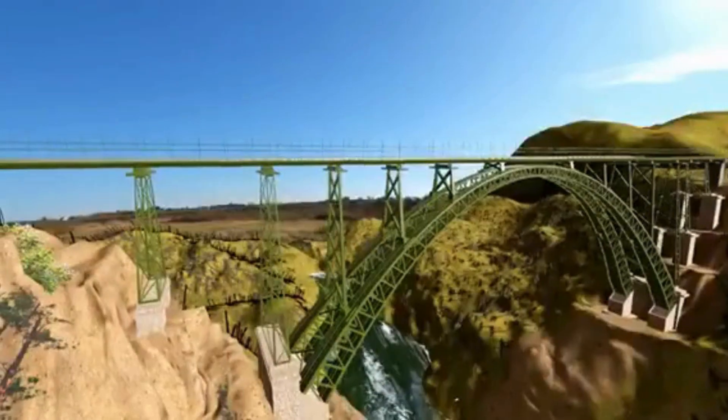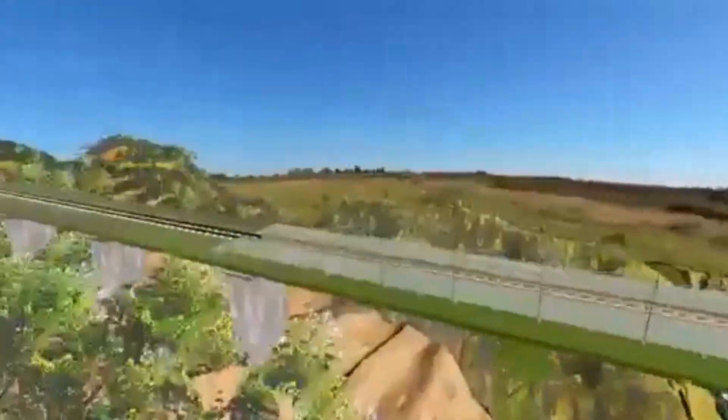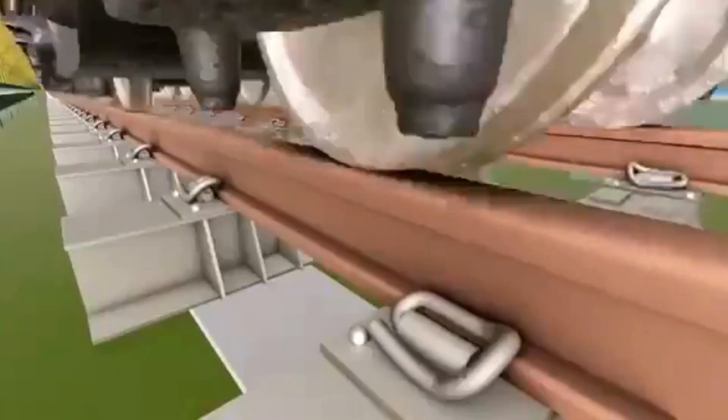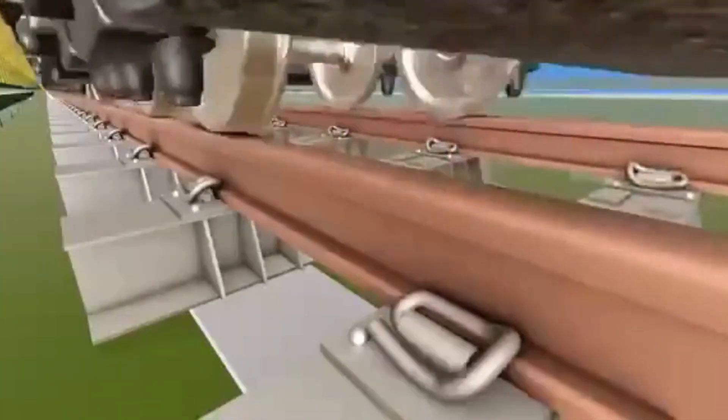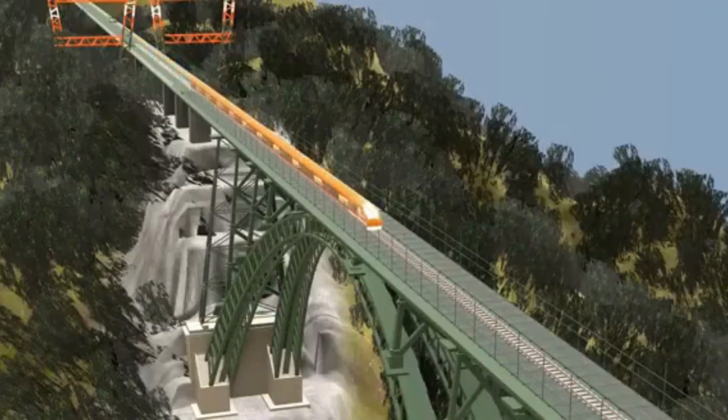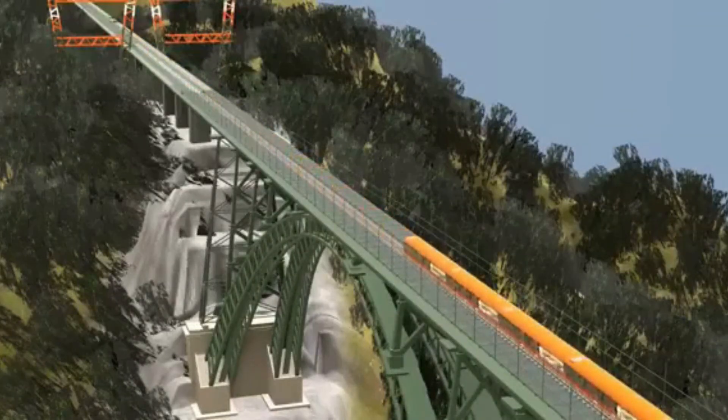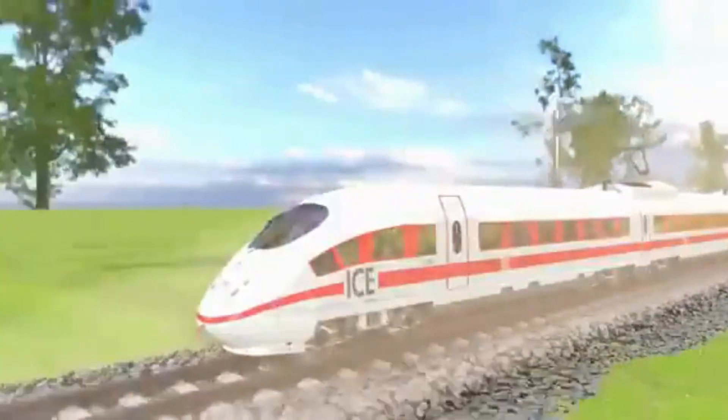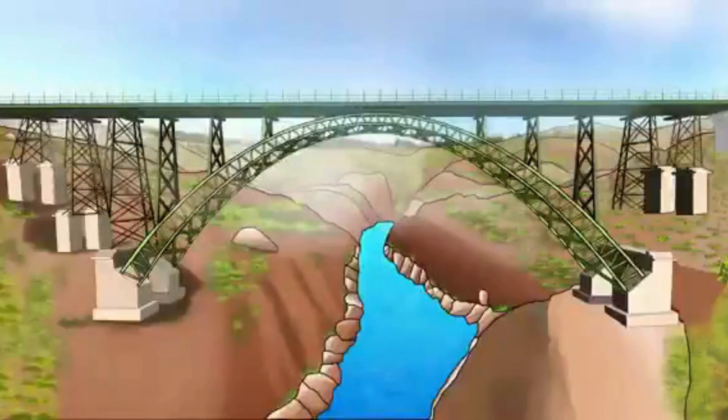The Chenab bridge uses a ballastless track. Almost all high-speed railway projects use this technology. These animations illustrate how the different components in the ballastless track absorb vibrations. This bridge is designed to support a train with a maximum speed of up to 100 km per hour. Ballast tracks have the issue of dust pollution and they have a low life expectancy.